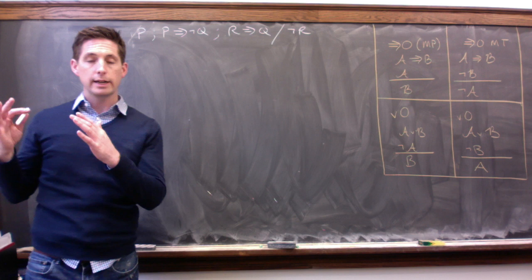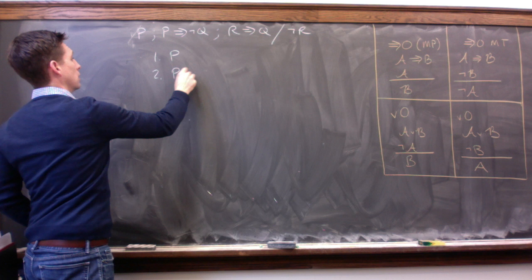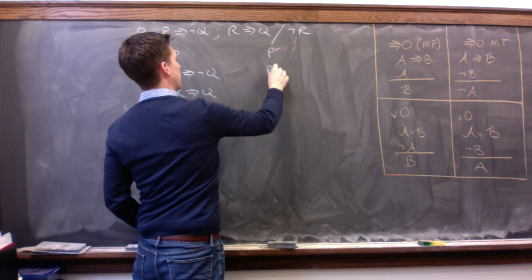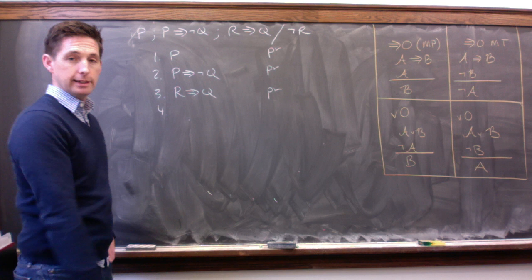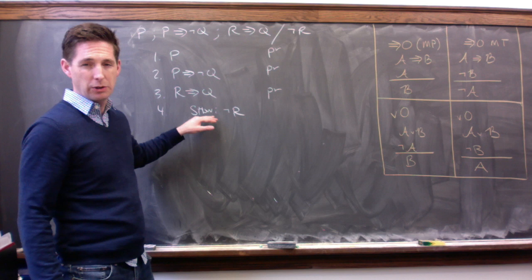So again, just as before, we start off by writing on our premises. Numbering the lines, writing our premises, and citing why we're allowed to write them, which is PR. So we're going to say P, P arrow not Q, and R arrow Q. Those are our premises. And we're going to say PR beside each one as our reason for being allowed to write them down. Finally, we're going to write down our conclusion and we write the word show before that to indicate that it's the thing we're trying to show. So show not R. And we don't write down a justification yet because we haven't yet actually shown it. We're going to do that at the end.